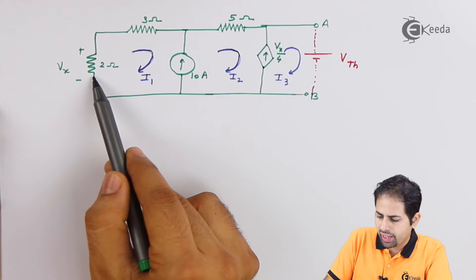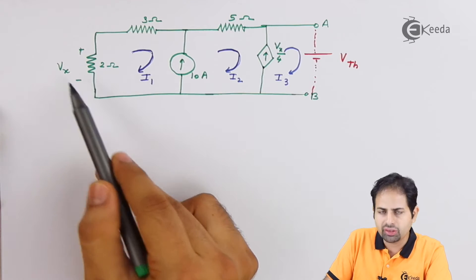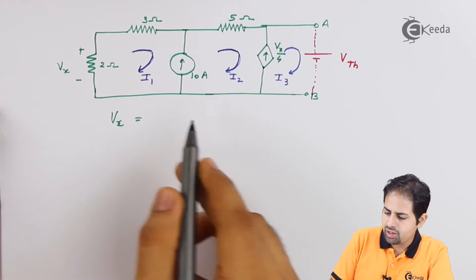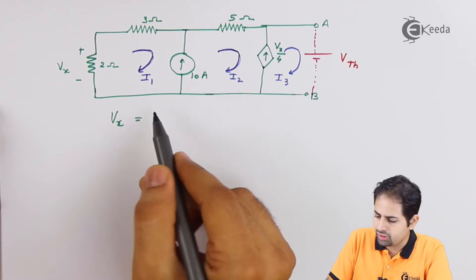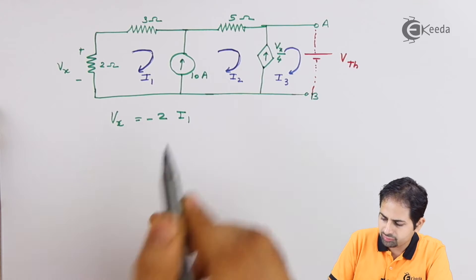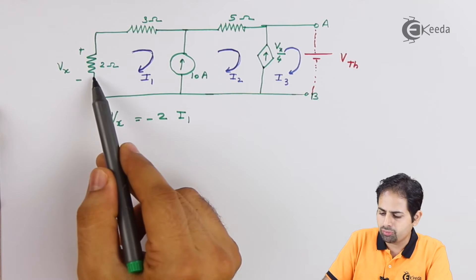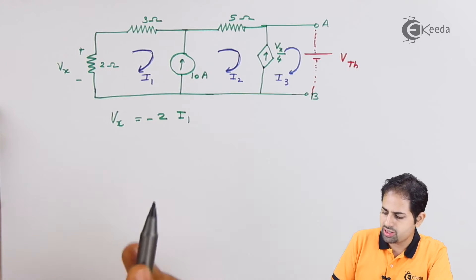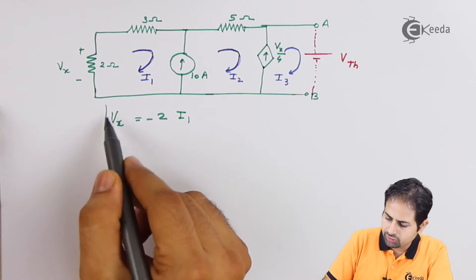Now see, current is entering into a negative terminal of this resistance which is given in the question. So we can write Vx, voltage is resistance times current. So it will be 2 into I1 with minus sign because it is entering from negative terminal. So it is resistance into current, that is minus 2 into I1. So this is our one conclusion.